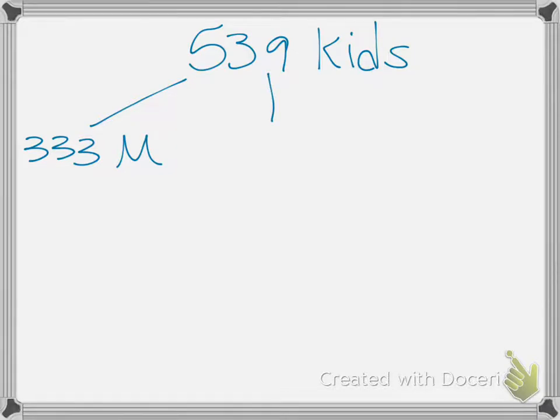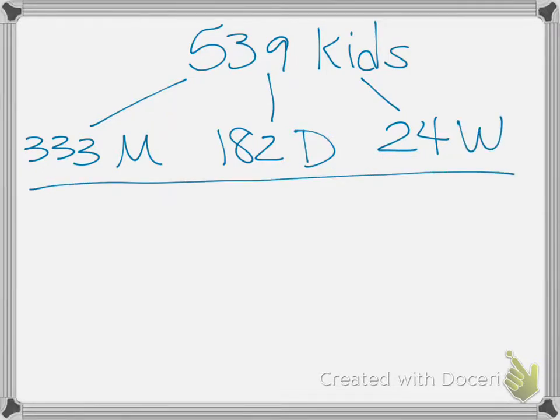Their parents might be divorced. So for 182 of the children, their parents are divorced. And the last outcome is their parents might be a widow, and that is happening for 24 of these kids. So that's the information that we have.